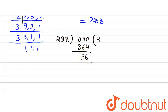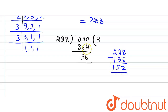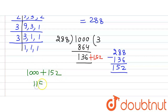To make 1000 divisible by 288, we need to add to the remainder so that it equals 288. So we subtract 136 from 288: 288 − 136 = 152. After adding 152 to 1000, we get a number divisible by 288. So the required number is 1000 + 152 = 1152.